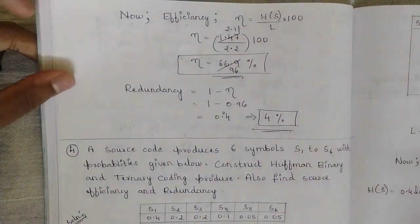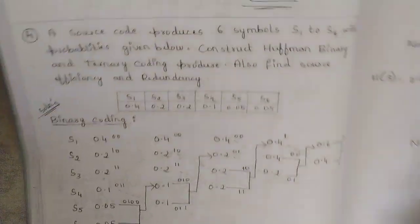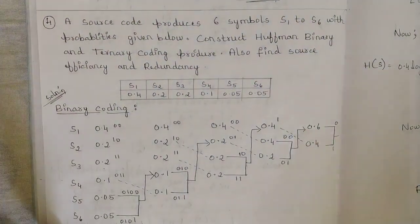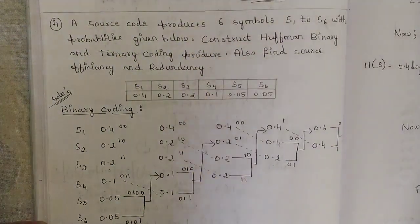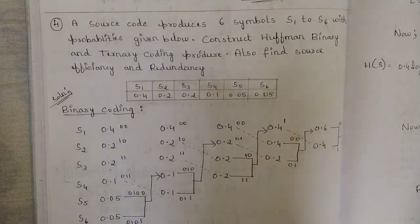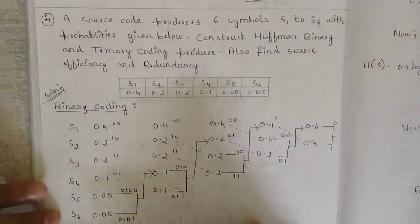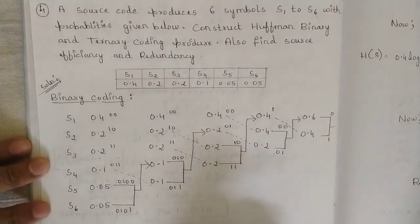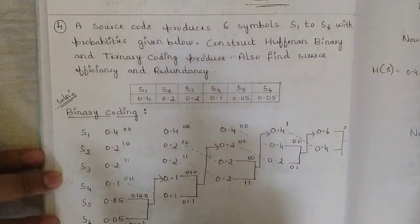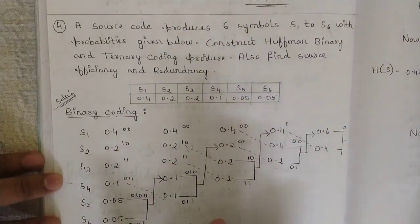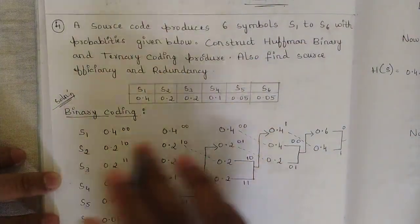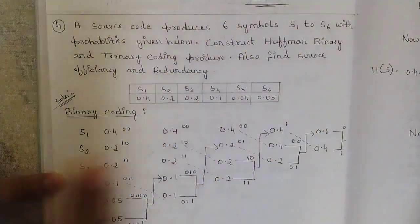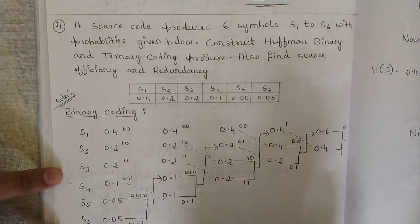Now one more kind of problem: Huffman coding in two forms — binary and ternary coding. The chances of being asked ternary coding are very less, but the factor of alpha comes into the picture in ternary coding, so I thought to solve this kind of problem as well. The binary part procedure remains the same as discussed before, so let us skip directly to the ternary part.